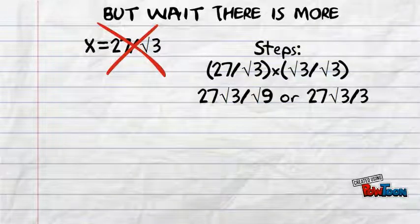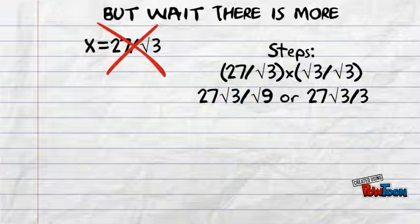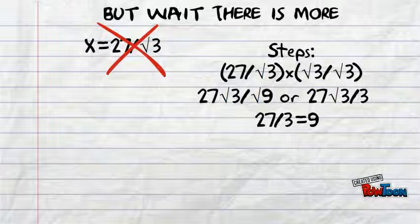Once you do that, you get 27 root 3 over root 9, which simplifies to 27 root 3 over 3, because the square root of 9 is 3. After we do that, we are able to simplify even more by dividing 27 by 3. Then, your final exact answer becomes 9 root 3.